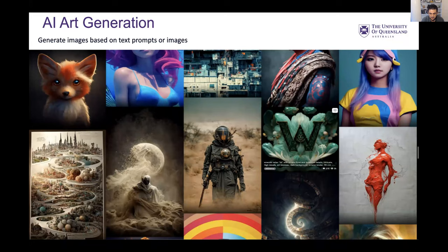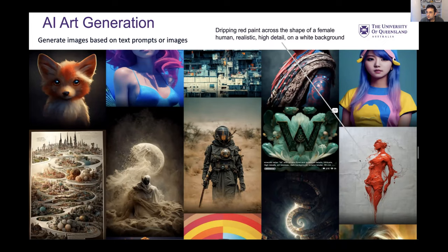AI art generation has been quite phenomenal to see in terms of how things have changed in the last few years. Some of the images you see here have been created via prompts — you input text as a prompt for the image to be created. For example, this image was created based on the prompt of 'dripping red paint across the shape of a female human, realistic high detail on a white background.' There are various rounds of potentially going back and forth and changing the prompt to get the output you want, but essentially that's the whole process of how it often happens with AI art.